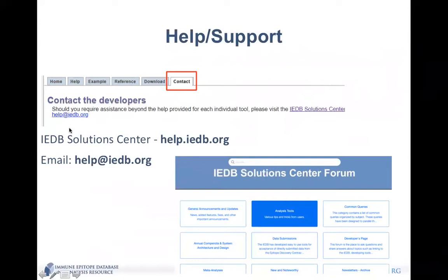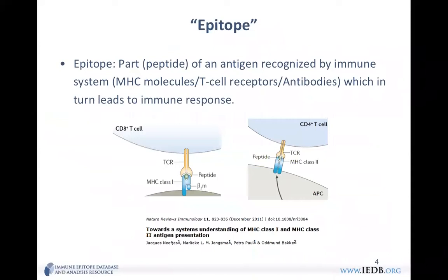So what is an epitope? Let's start from there. An epitope is basically part — in the case of protein antigens, a peptide — or part of an antigen that's being recognized by the immune system. It can be MHC molecules or T-cell receptors in the case of T-cells, or antibodies in the case of B-cells, which in turn leads to an immune response.